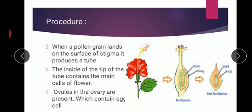First of all, they are saying that when a pollen grain lands on the surface of the stigma — in the flower — when the pollen grains from the surrounding are carried by the help of wind, by the help of insects into the flower, they are present on the stigma. Inside the tip of the tube, it consists of the main cells of the flower. The main reproductive organs are present, which we have viewed in our previous slide. The ovules in the ovary are present, which contain the egg.